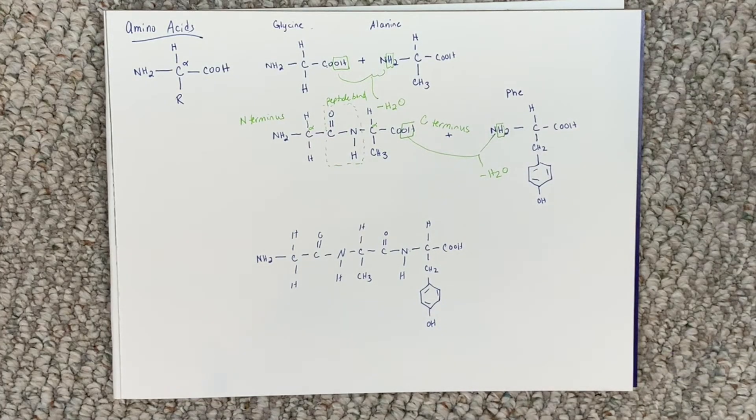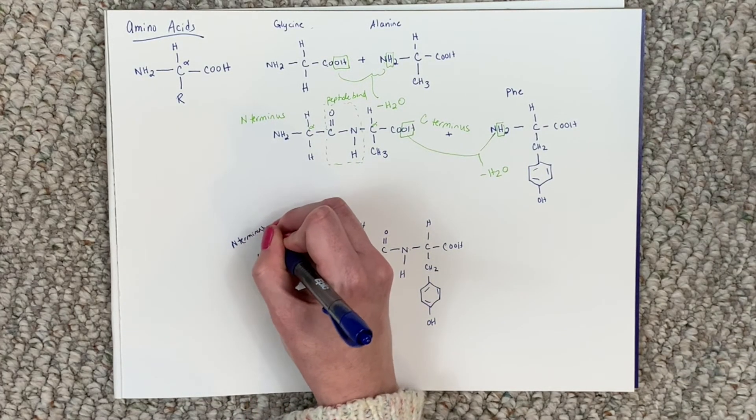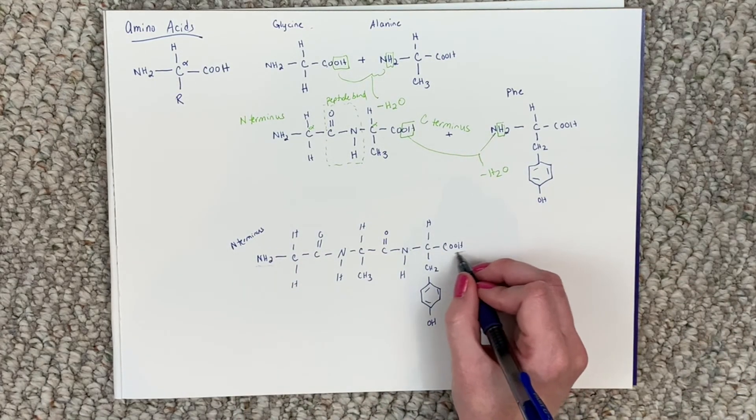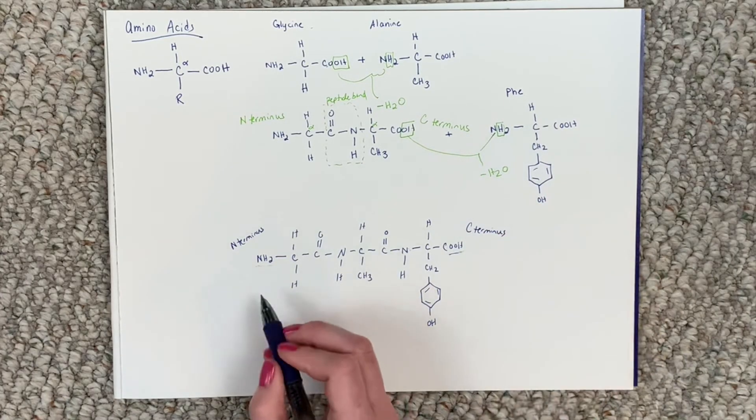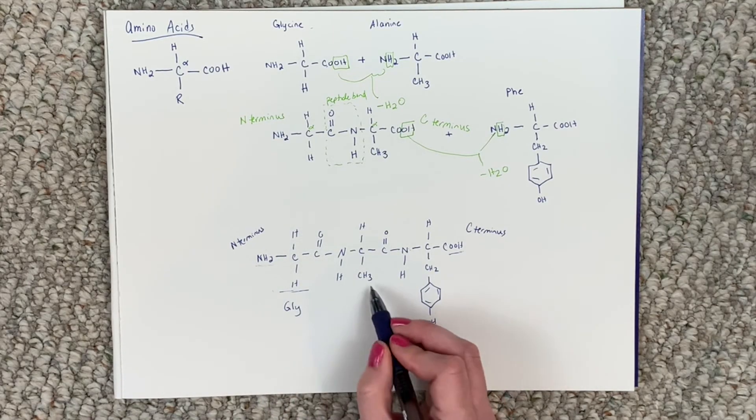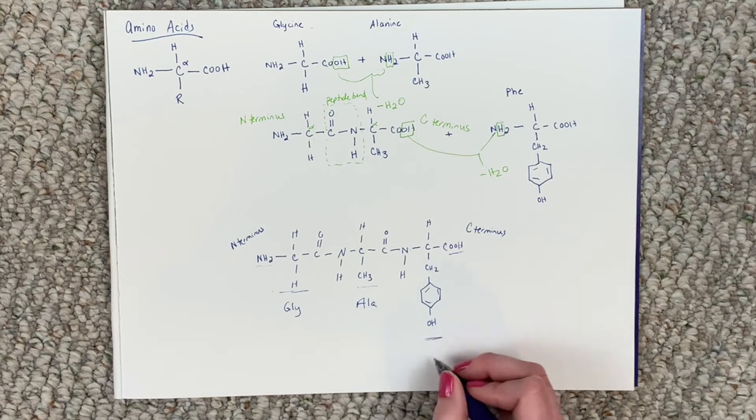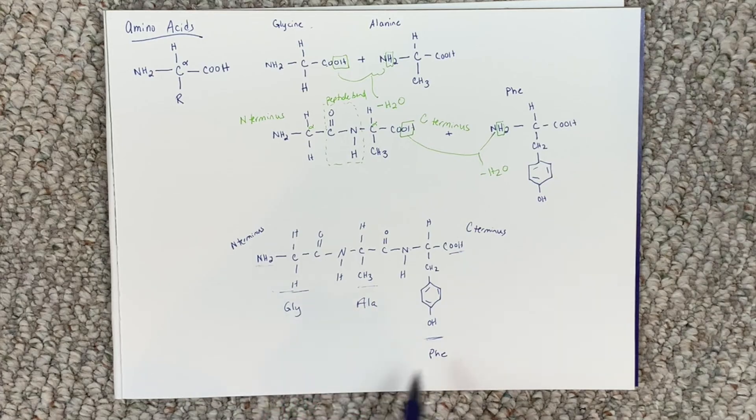So this is perfect. So this is still the N-terminus end because we have our NH2, our terminal NH2 here. Here's our terminal carboxylic acid. This is the C-terminus end. And right here we have glycine, alanine, and our phenylalanine. So we have three amino acids forming this peptide.